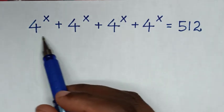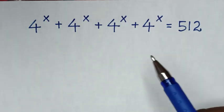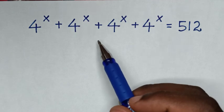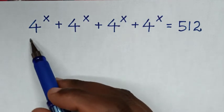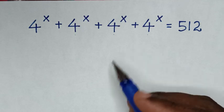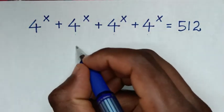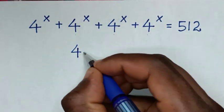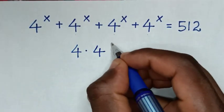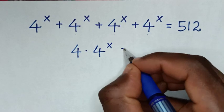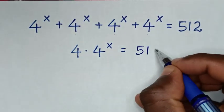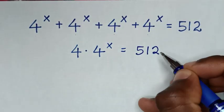Now from the left side we have how many 4 power of x — it is 1, 2, 3, 4. So it will be 4 times 4 power of x is equal to 512.